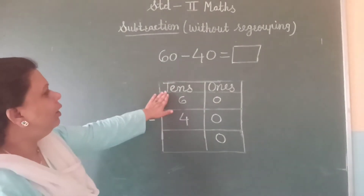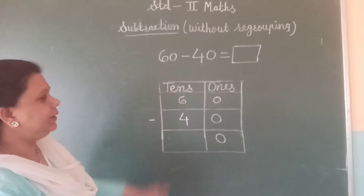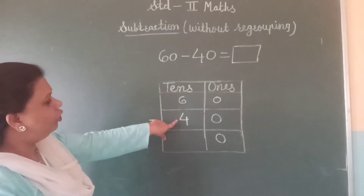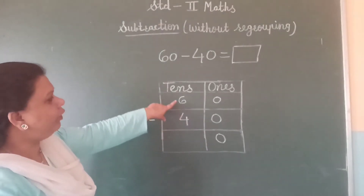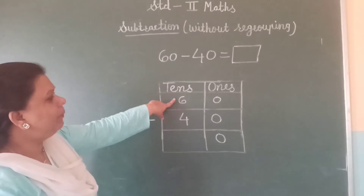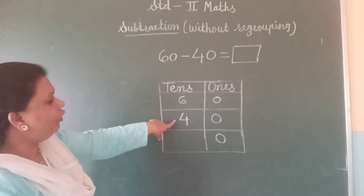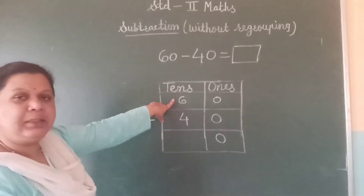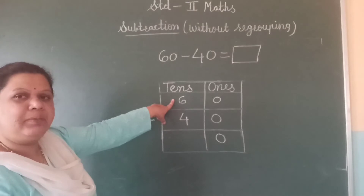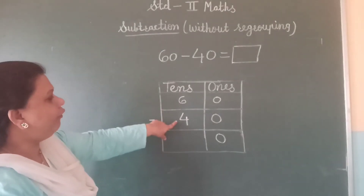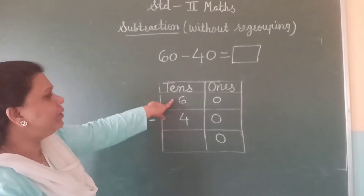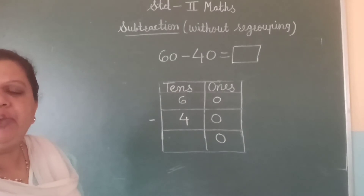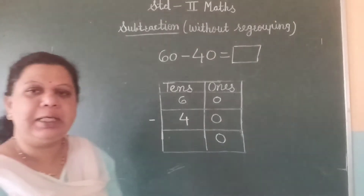Now, we will subtract the tens place. We subtract the lower number from the upper number. Here, four is the lower number and six is the upper number. So, let us subtract four from six. For this, take your six fingers.